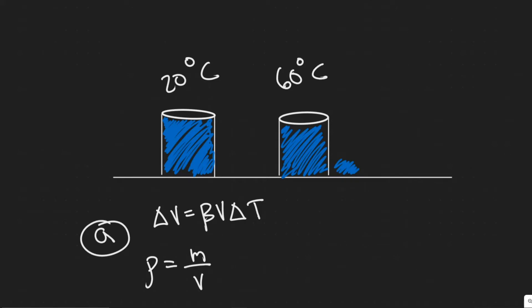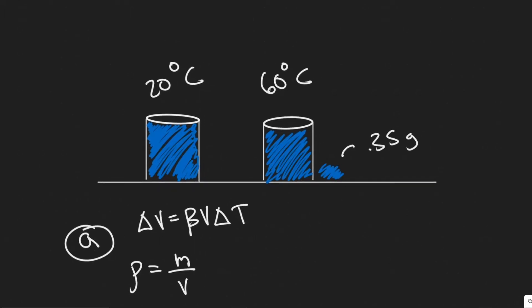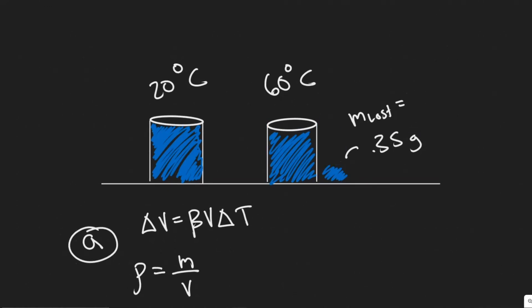At 60 degrees Celsius, it's going to be full to the brim, but there's going to be 0.35 grams — that's the mass of the water lost. So we can call it M_lost. The water falls out since it expands when you heat it up, which is going to cause 0.35 grams of water to fall out of our cup.